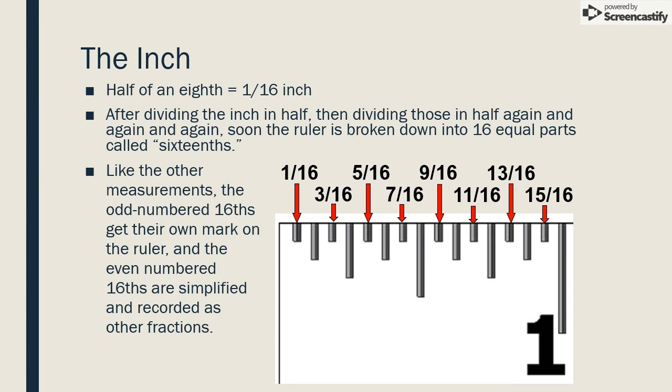After dividing the inch in half, then dividing those in half again and again and again, soon the ruler is broken down into sixteen equal parts called sixteenths. Like the other measurements, the odd-numbered sixteenths get their own mark on the ruler, and the even-numbered sixteenths are simplified and recorded as other fractions.